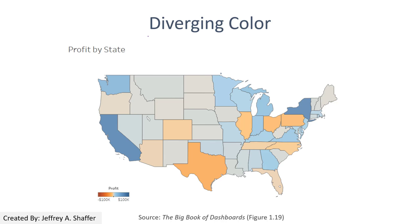This is an example using diverging color. We use blue and orange and change their brightness. Here we can emphasize whether states are making a profit or losing money — positive or negative. It is very clear which states are making profit and which are not.